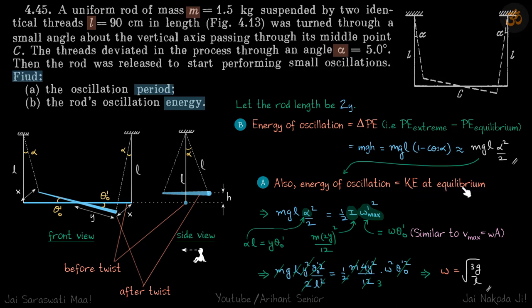Or energy of the oscillation can be written as kinetic energy of the body at equilibrium. Let's do it this way first because calculations are always simpler when we are just taking the change in potential energy. This is the 3D diagram of the rod when you are looking from the front.